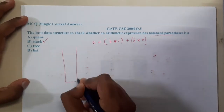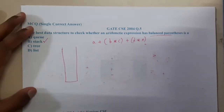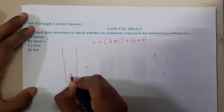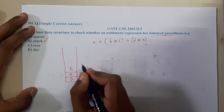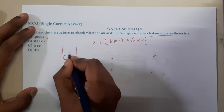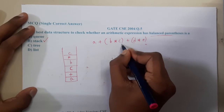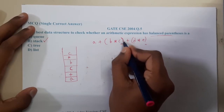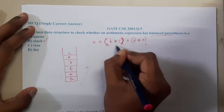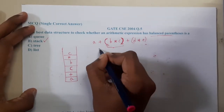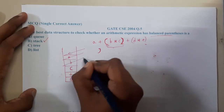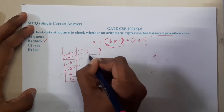So what we do with the stack: push 'a', push '+', push the open bracket, push 'b', push '*', push 'c'. Once you encounter a close bracket, you start popping until you find an open bracket. So you pop 'c', '*', 'b', and the open bracket — those elements form a matched pair, completing that bracket.